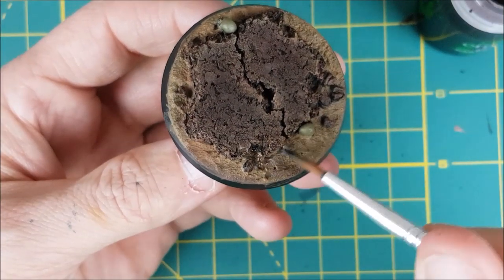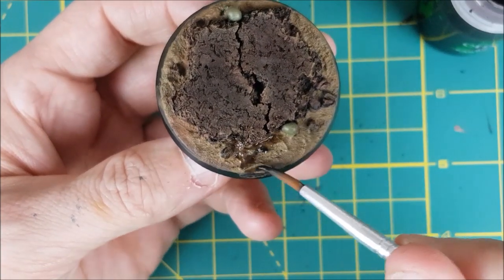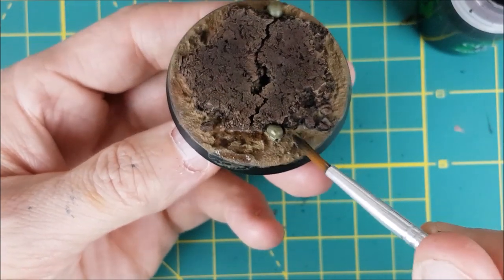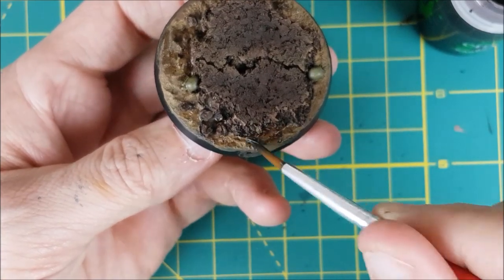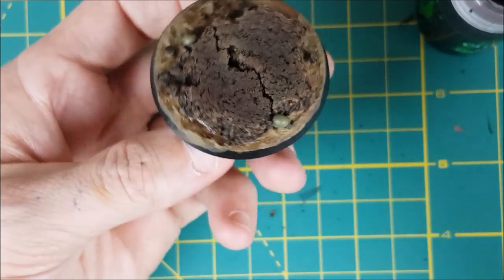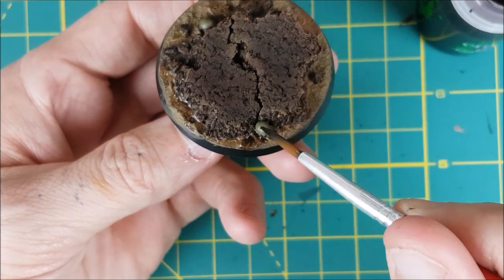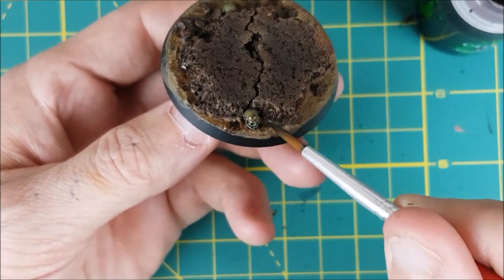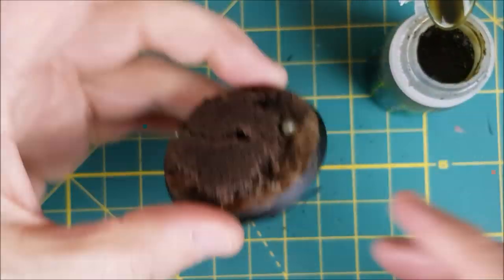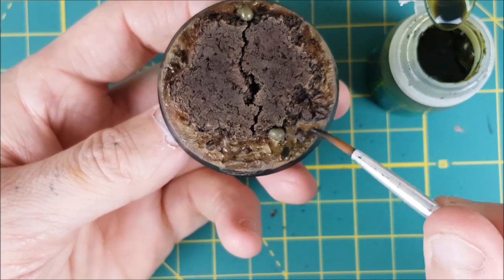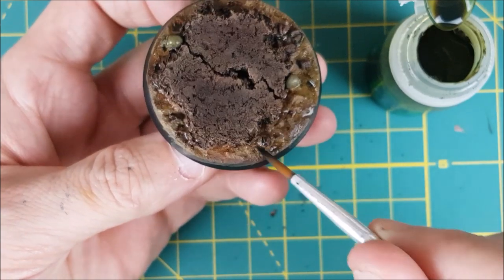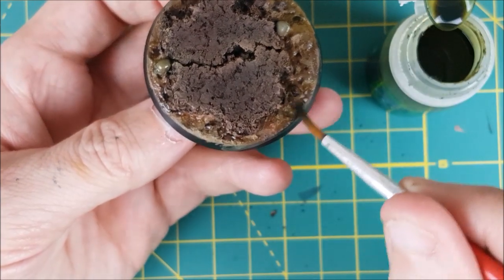Now I'm switching to washes. I'm using two different colors here. I'm starting off with a brown wash, Agrax Earthshade, and I'm just splashing this around in random places on the earth texture. After that, I'm switching to Athonian Camoshade, a greenish brown wash, and I'm putting this in all the places that I missed with the Agrax Earthshade. Feel free to use these washes on the skulls as well.